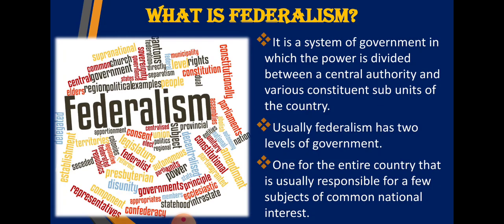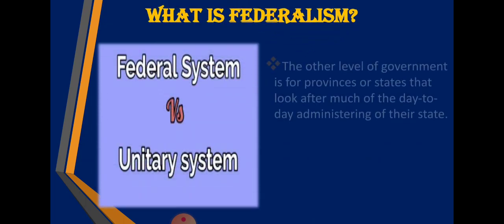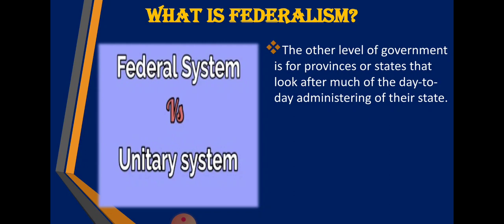Subjects that require uniformity, where the country needs to appear strong as a single unit - powers over those subjects belong to the central or union government. The other level of government is for provinces or states that look after much of the day-to-day administration. The second level of government handles daily administrative challenges, manages the state, manages law and order, and so on.